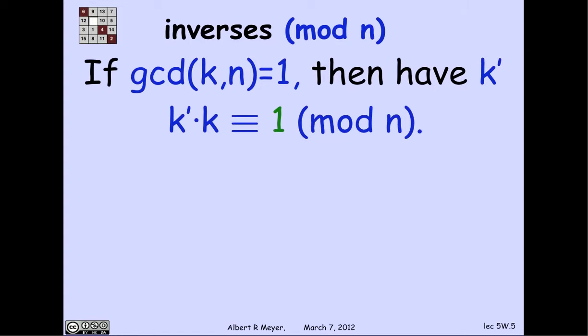So the proof of that is based on the following idea. Let's say that a number k' is an inverse of k mod n if k'·k ≡ 1 (mod n). So k' is like 1 over k with respect to mod n. But of course, 1 over k is going to be a fraction unless k is 1. And so k' is going to be an integer that simply acts like 1 over k.